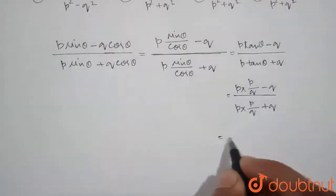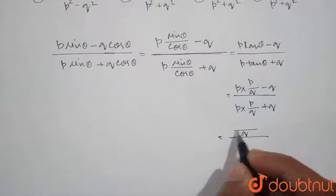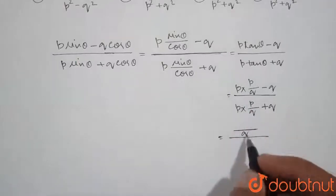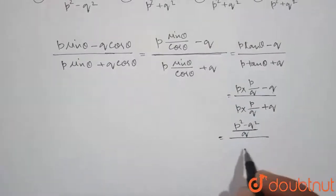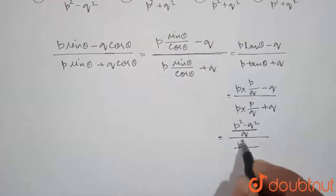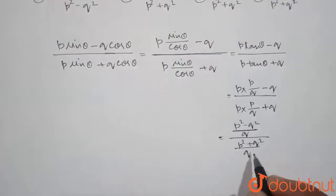So, now further simplifying we get q, the LCM of this and this will be q and it will be p square minus q square, similarly q divided by p square plus q square.